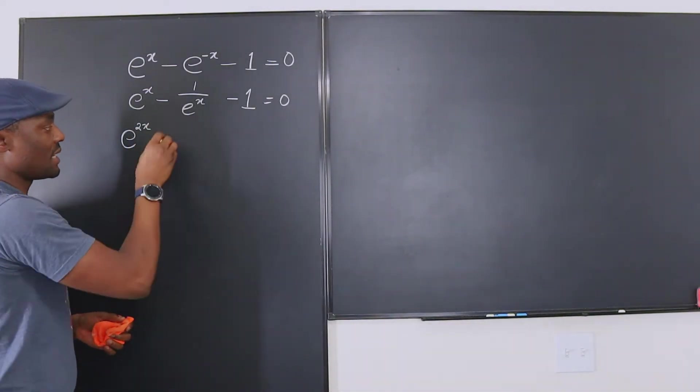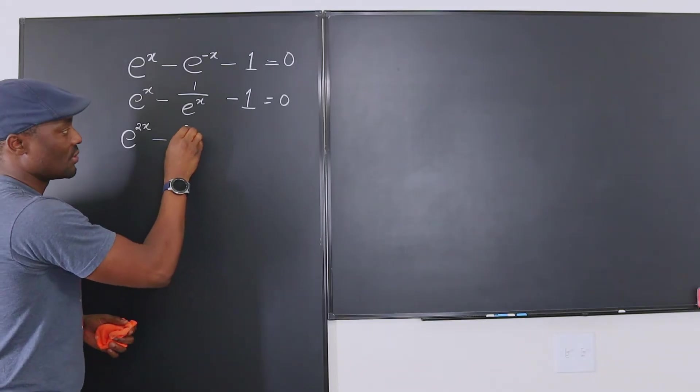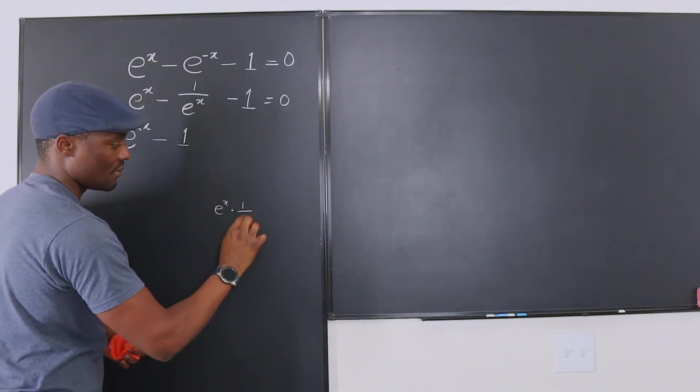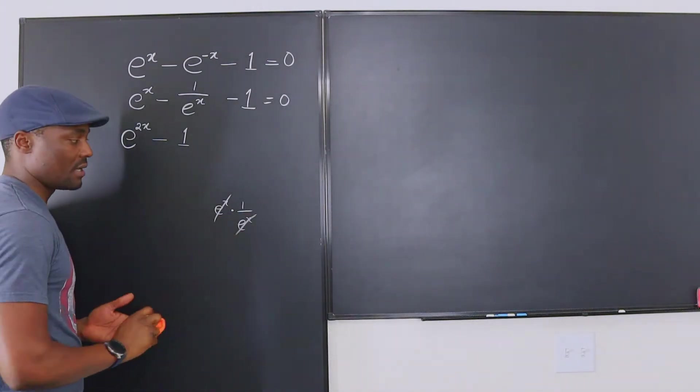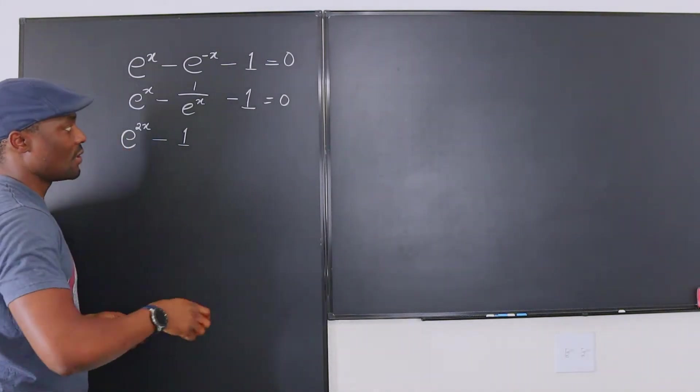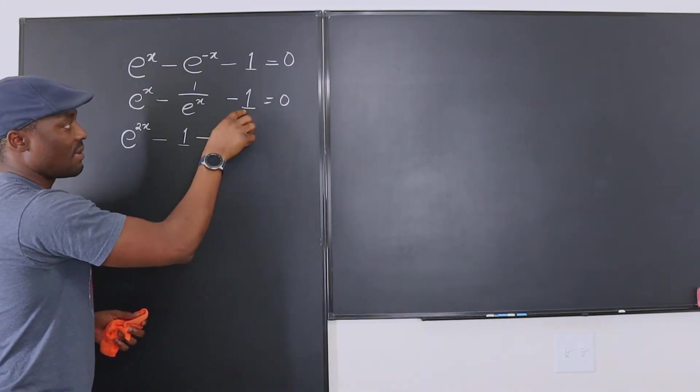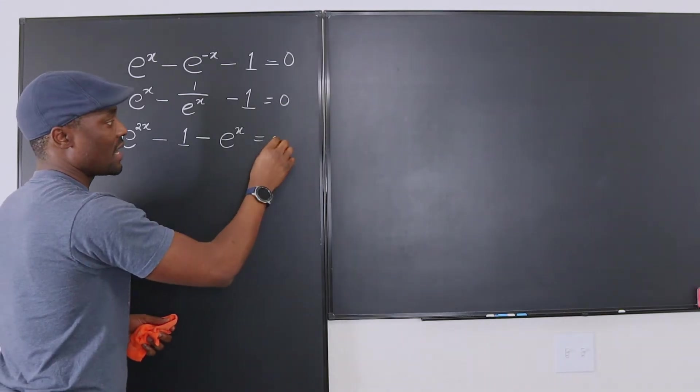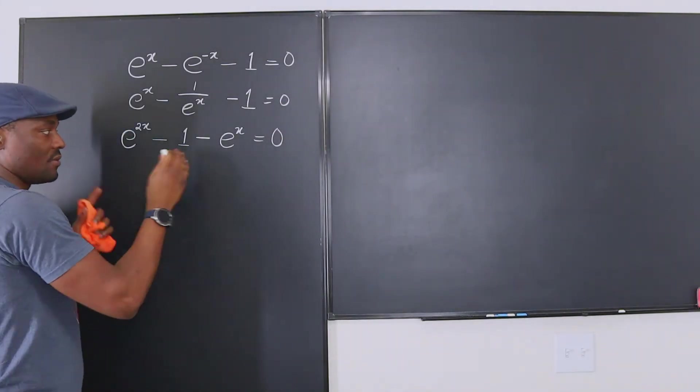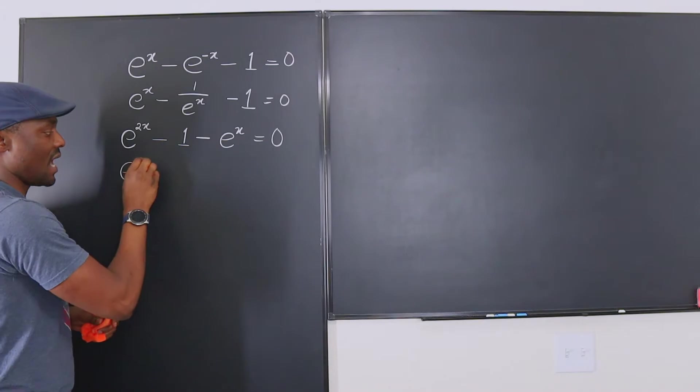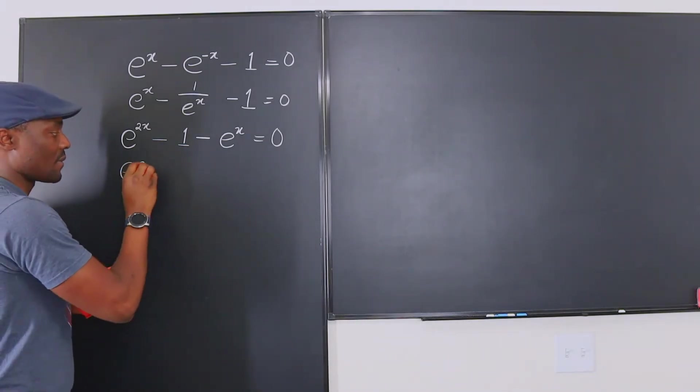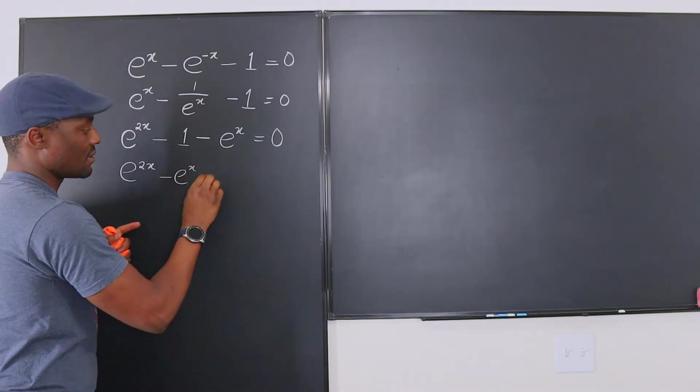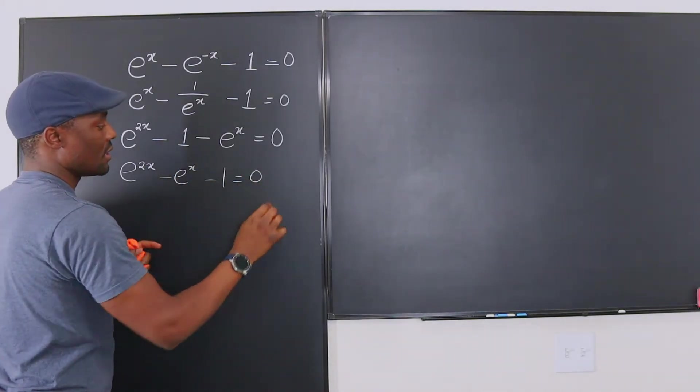Now if you multiply this by e to the x it's going to be just 1 because it's going to be e to the x times 1 over e to the x. They cancel out. So that's how that goes. Minus, if you multiply this by e to the x you're going to get e to the x. And multiply 0 by e to the x you get 0. We can rearrange this and write this e to the 2x minus e to the x minus 1 equals 0.